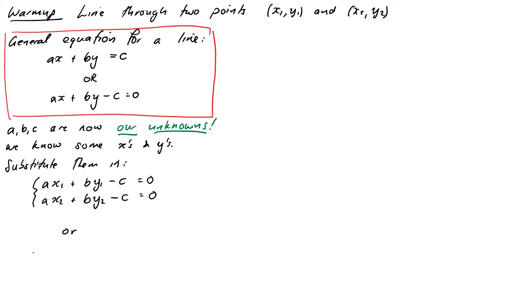So we can rewrite this in matrix form as the matrix x1 y1 negative 1, x2 y2 negative 1 times the vector a, b, c equals 0, 0.